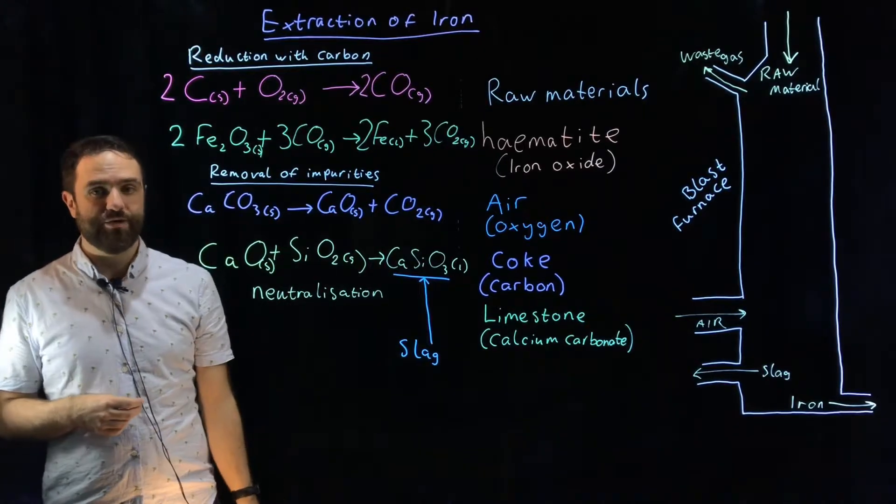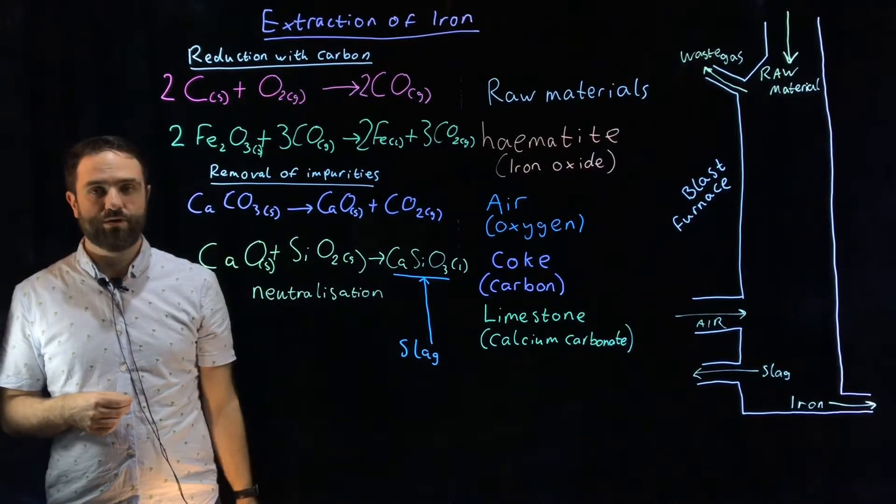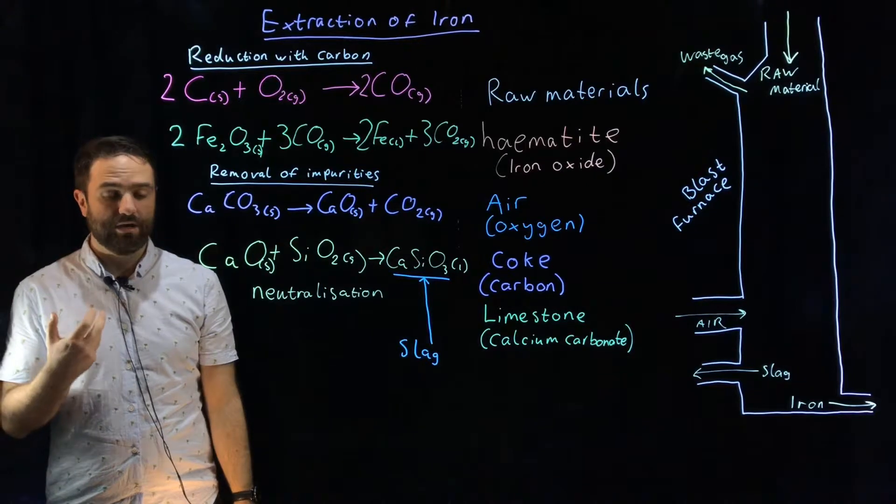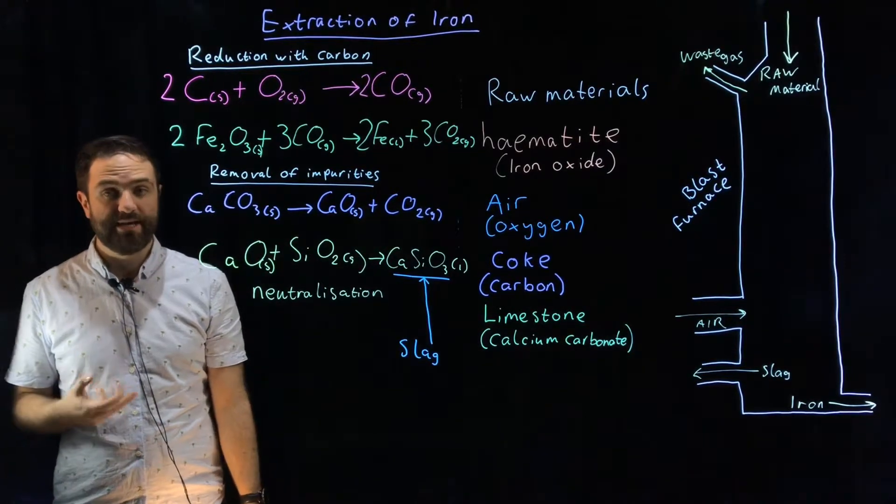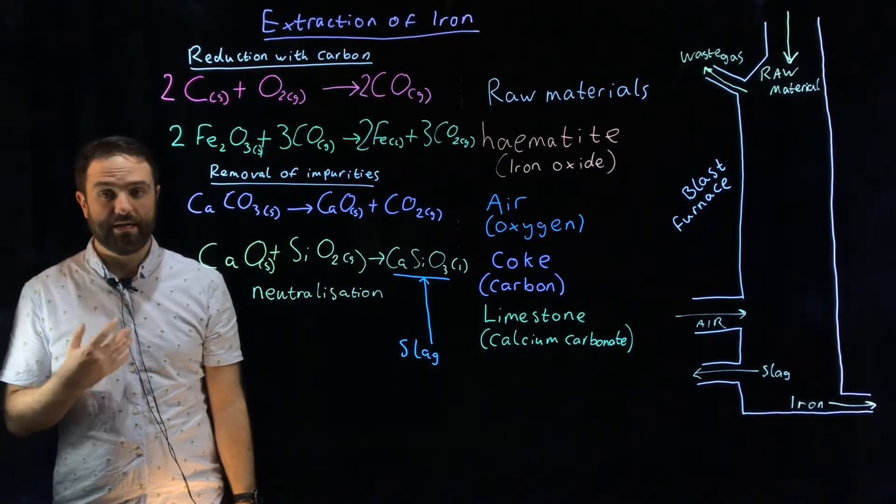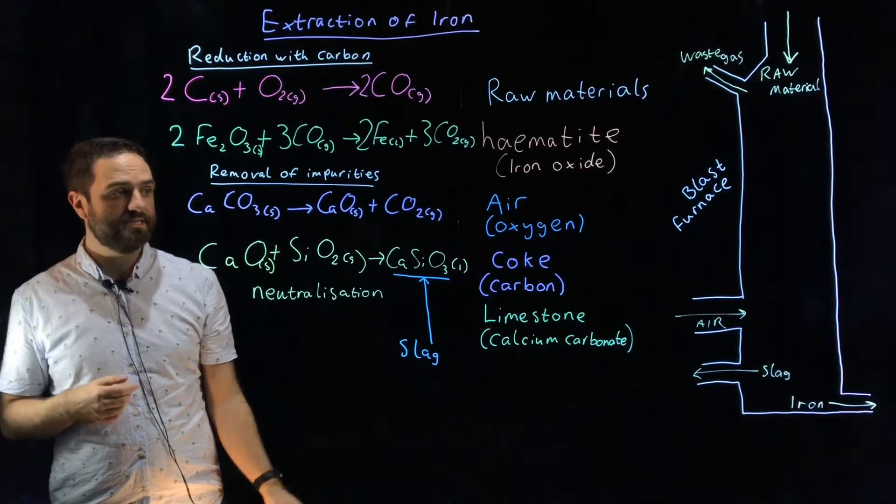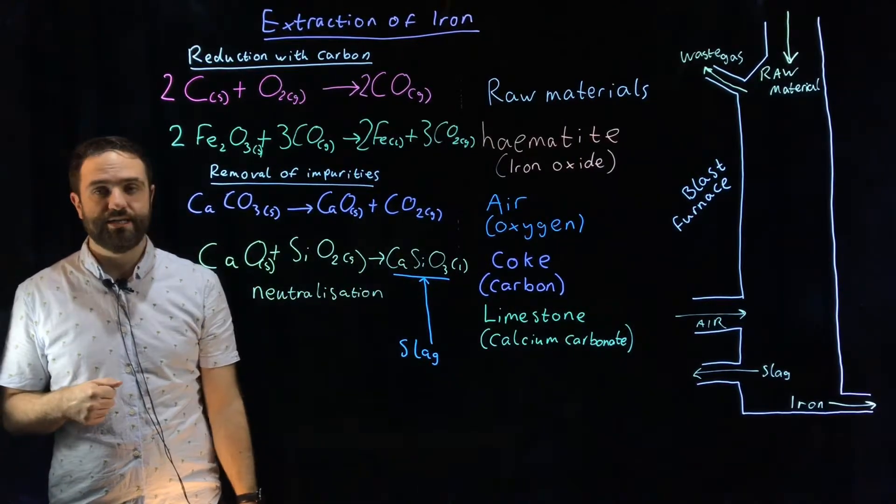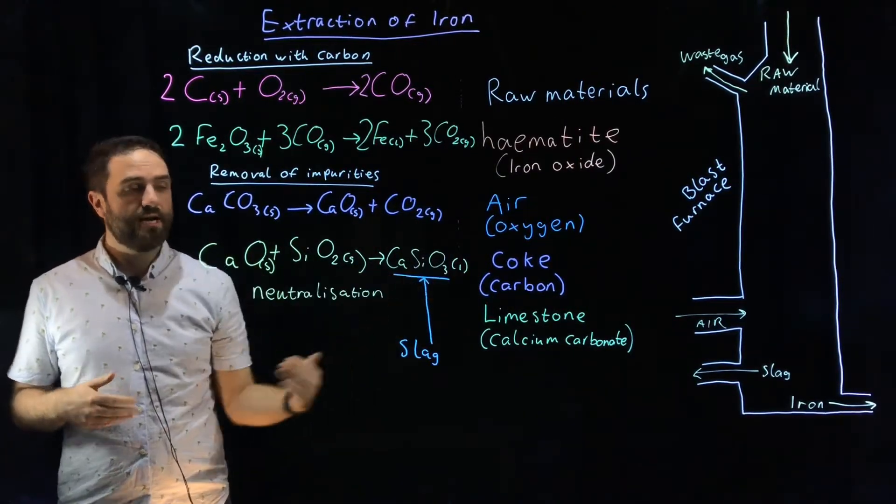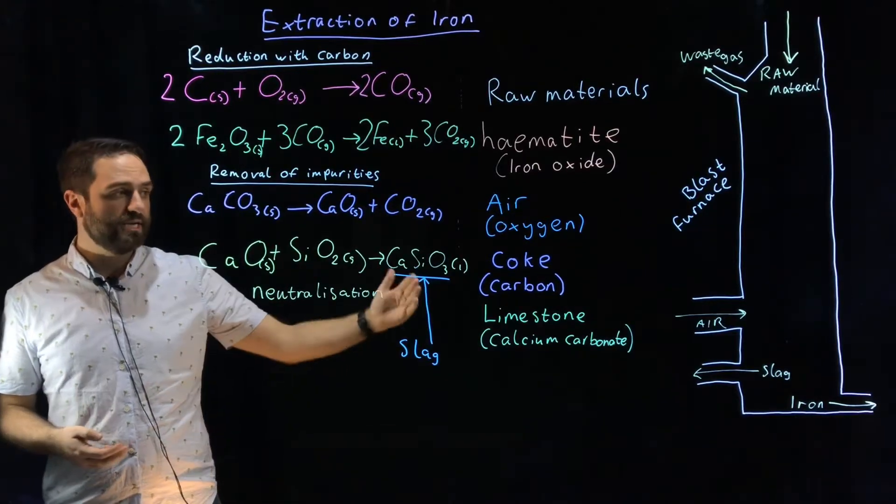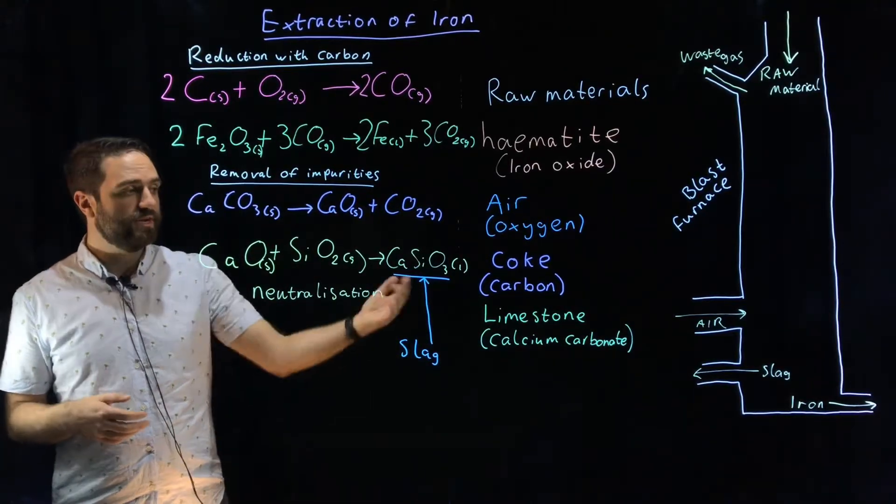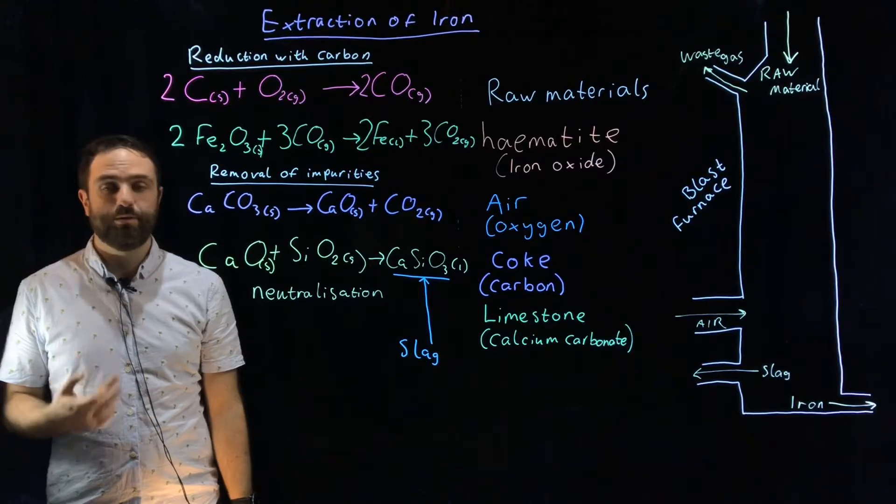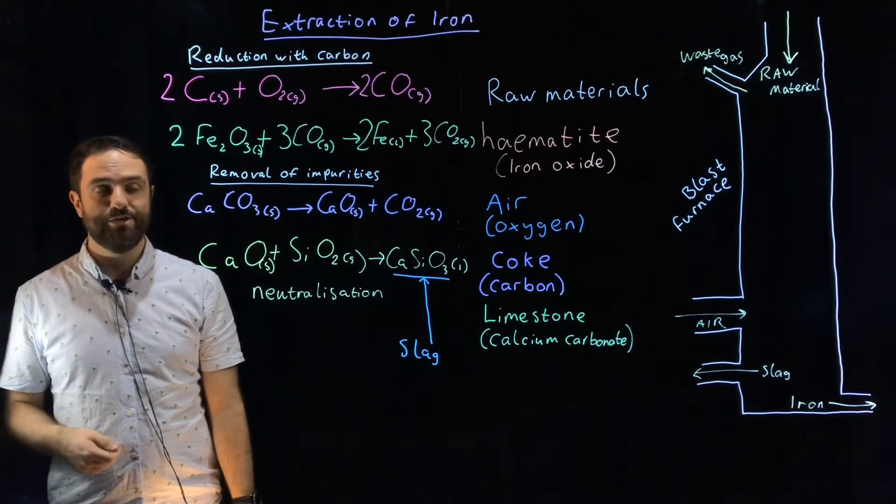This is a neutralization reaction because the calcium oxide is, like all metal oxides, a base, whereas the silicon dioxide, like all non-metal oxides, is an acid. This is a neutralization reaction. The slag floats on top of the iron and can be skimmed off, leaving us with liquid iron which we can cool down and use.